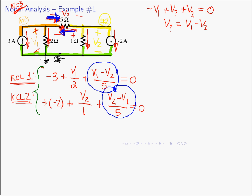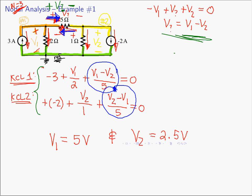You have two equations and two unknowns — solve by Cramer's rule, back substitution, inverse matrices, whatever you prefer. For this circuit, V1 equals 5 volts and V2 equals 2.5 volts. Once you have the node voltages, you can find any voltage in the circuit. For example, the voltage across the 5-ohm resistor is V1 minus V2 equals 2.5 volts. Once you have all node voltages, you can find powers, currents — everything you're looking for.